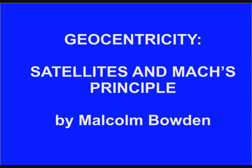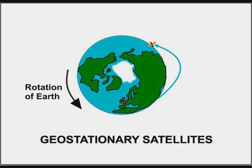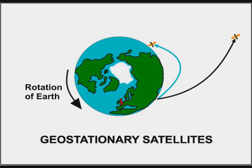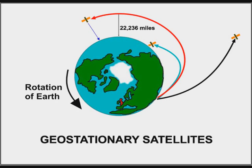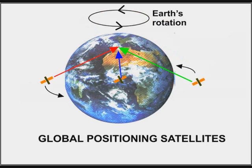Geocentricity, Satellites and Mach's Principle by Malcolm Bowden. If you send a small rocket into space, it will fall back to Earth. Send up a very powerful rocket and it will leave the Earth's gravitational field. If you send it up to be 22,236 miles above the Earth, going round the equator, it will travel round the Earth continuously at the same rotation as the Earth turns, staying over the same place on the Earth's surface. These are known as geostationary satellites, and are used for fixing the position of objects on the ground by calculating their distance from several satellites.